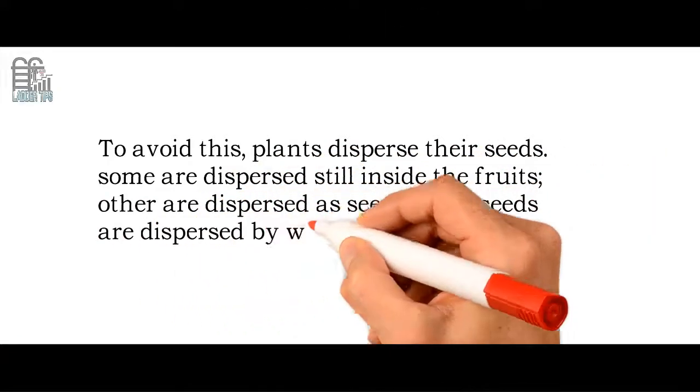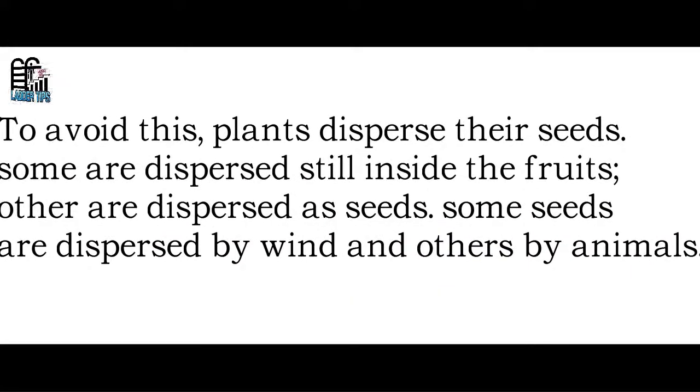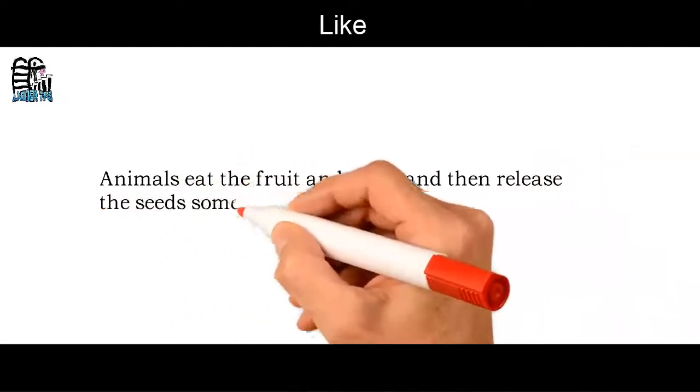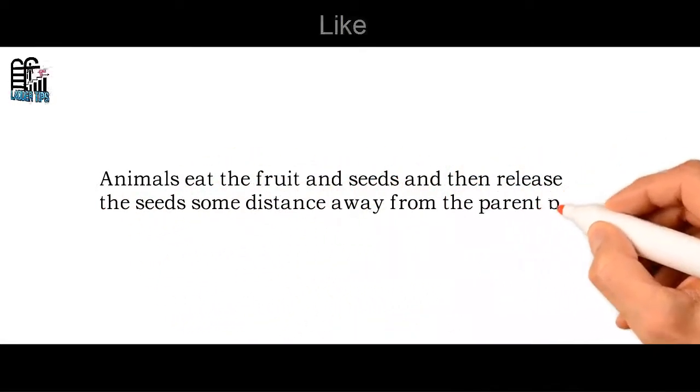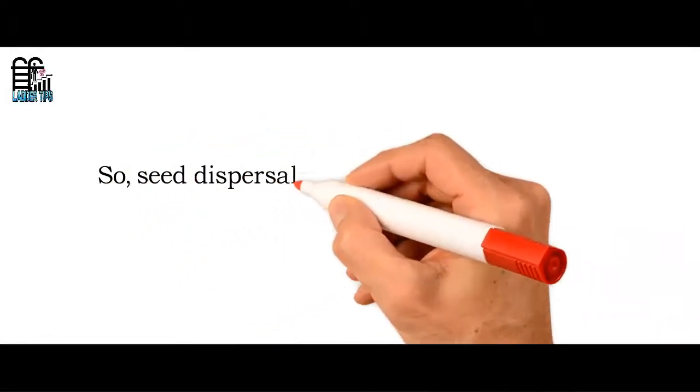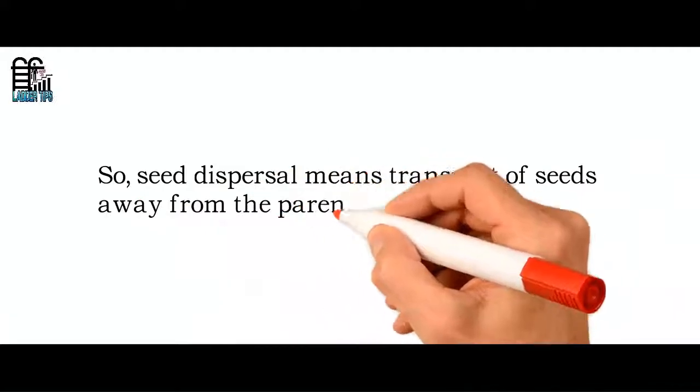Some seeds are dispersed by wind and others by animals. Animals eat the fruit and seeds and then release the seeds some distance away from the parent plant. So seed dispersal means transport of seeds away from the parent plant.